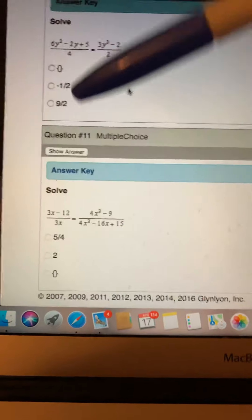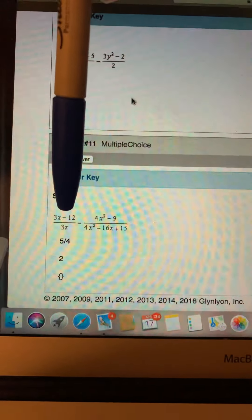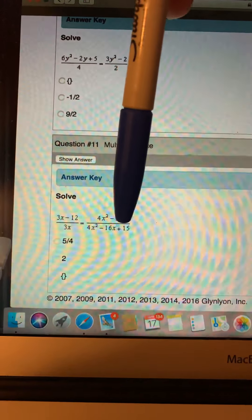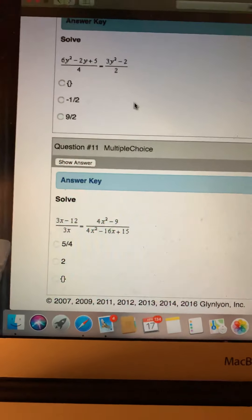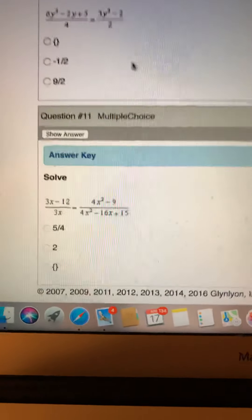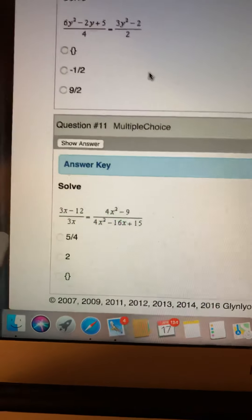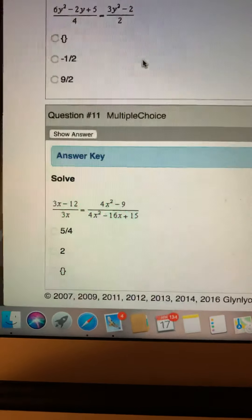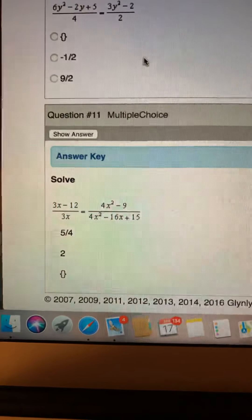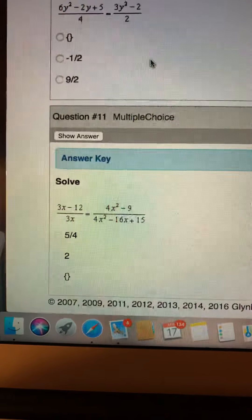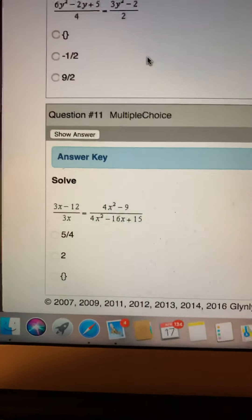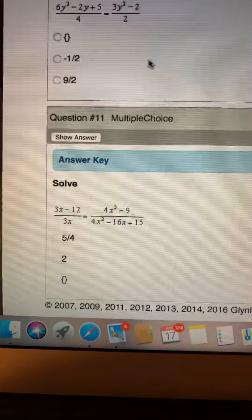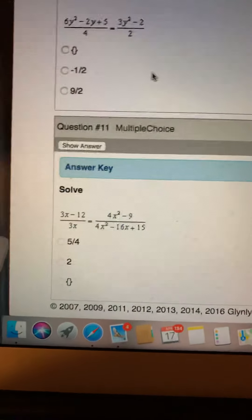So you can factor out a 3 in this one up here. Over here, that's the difference of two perfect squares, and here it's just going to take a little bit of trial and error to figure out what the factoring is there. So go ahead and factor everything first, and that should lead to some cancellation that you can do which will simplify this problem. Then once you simplify the problem, you're just going to do what we just did in the last problem. You're going to set your cross products equal to each other and solve for x.